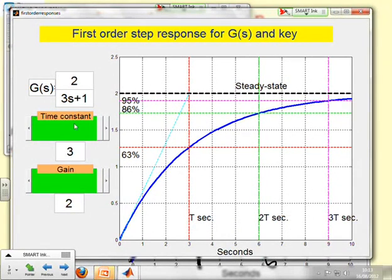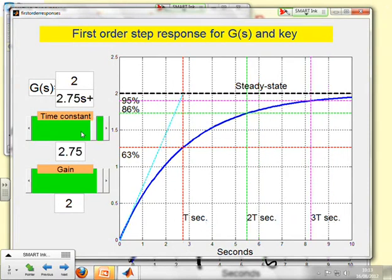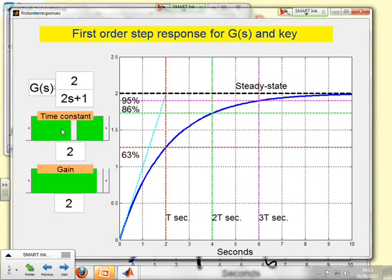And now watch what I'm going to do. I'm going to change the time constant by clicking in this relevant slider. See, it's gone to 2.75. And you'll notice that the curve changed. All the time constants moved and the steady state didn't change obviously, but all the time constants moved. If I make it smaller again, down to 2, you can see all the time constants have moved and the curve has changed.